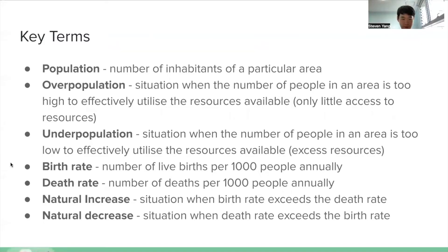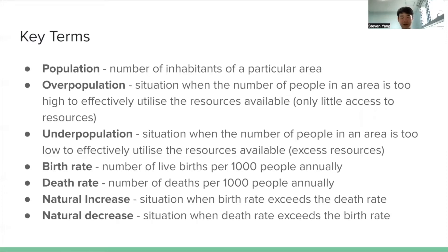Birth rate is the number of live births per thousand people annually. Death rate is the opposite — the number of deaths per thousand people annually. Natural increase is the situation when the birth rate exceeds the death rate, and natural decrease is when the death rate exceeds the birth rate.